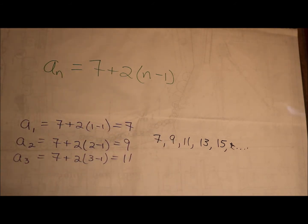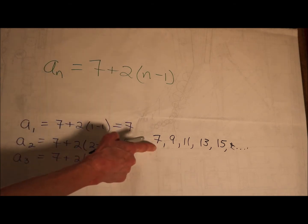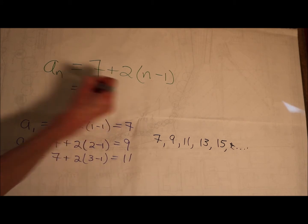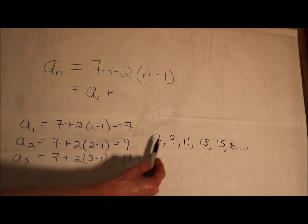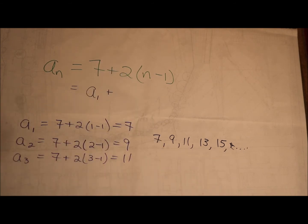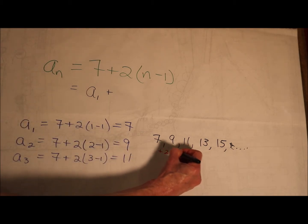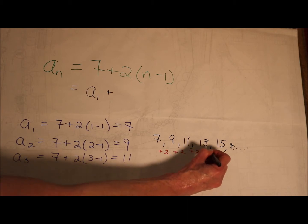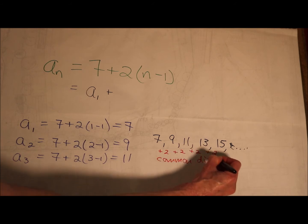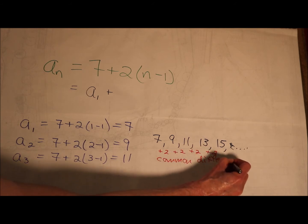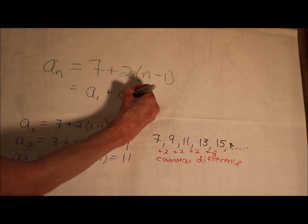Let's look and see if we notice anything here. That 7 — that's my first term. And that 2 — where does the 2 show up in that sequence? 2 is what we call the common difference. It's what I'm adding each time: plus 2, plus 2, plus 2, plus 2. Sometimes we use the letter d to stand for that, so d is the common difference.